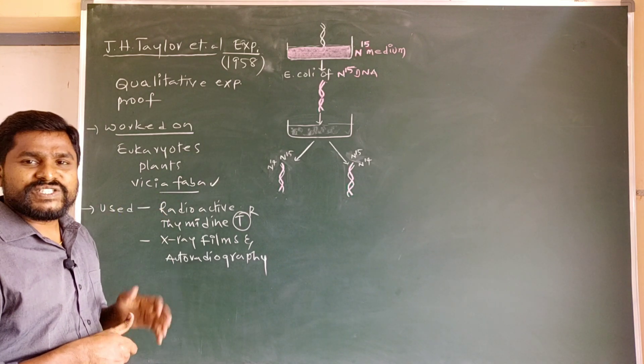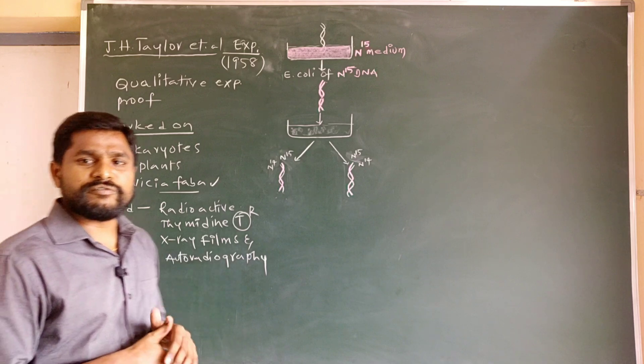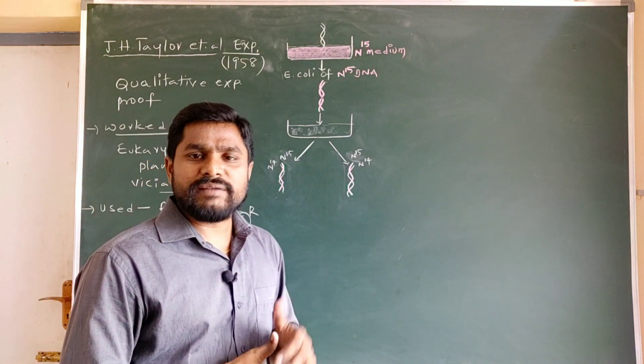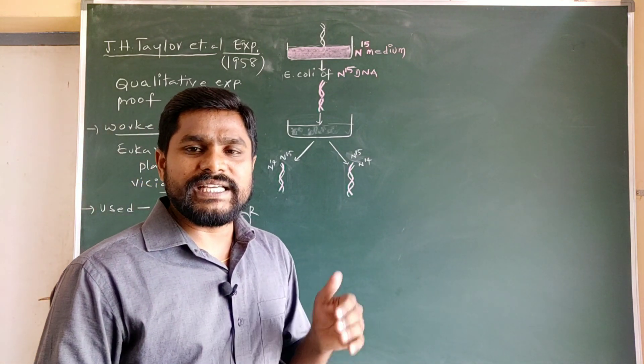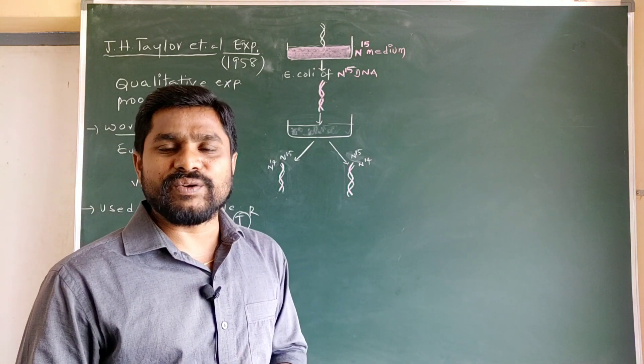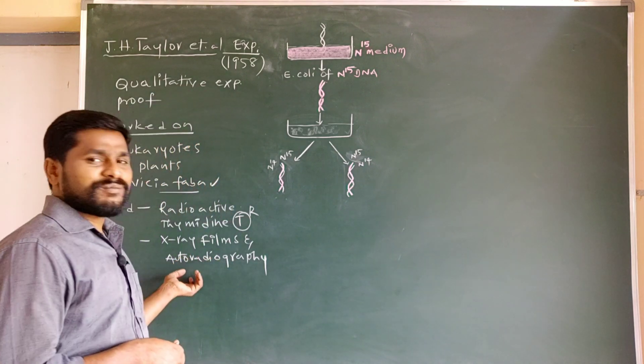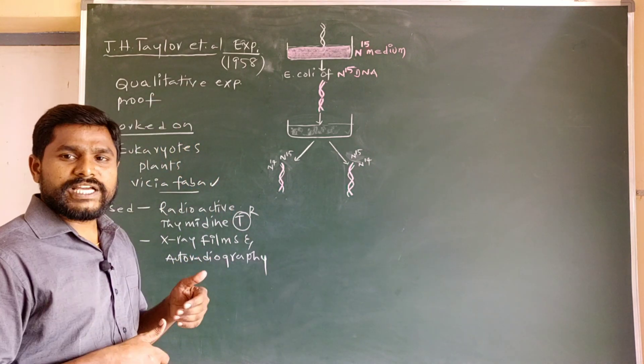Just by observing the distribution of radioactivity among the generations of Vicia faba cells, they came to know that the DNA is undergoing a semi-conservative model of replication.